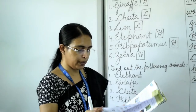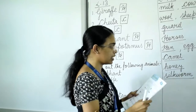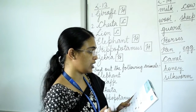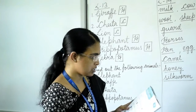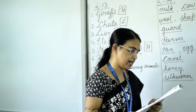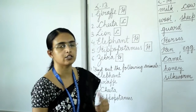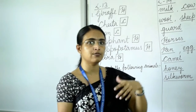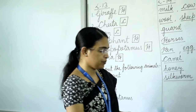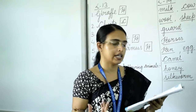Now turn the page and come to lesson number 14. In this page we are going to learn about domestic animals. Some animals live with us — we feed and take care of them; they are useful to us in different ways. These animals are called domestic animals, like dog, cat, cow, goat, etc.